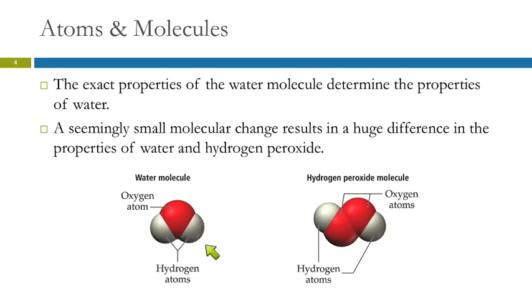Here's the water molecule. Here's a hydrogen peroxide molecule. It's composed of the same kinds of atoms, hydrogen and oxygen, but this one has two oxygens instead of just one. A seemingly small difference.